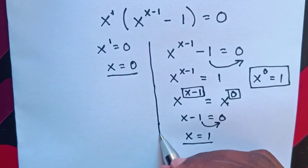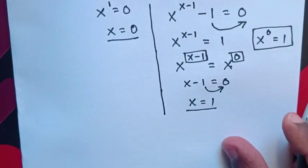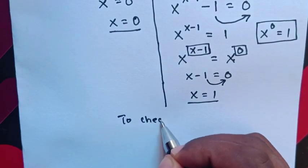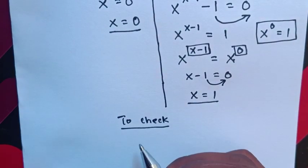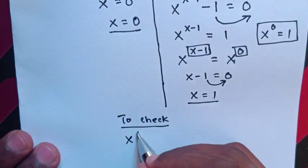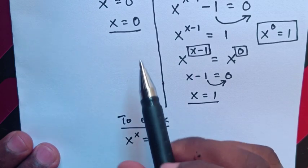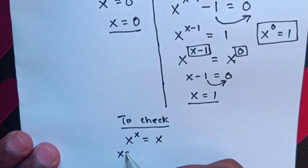So, from x = 0 and x = 1, let's check if our answers are correct. From our question, which is x^x = x, let's start check from x = 0.